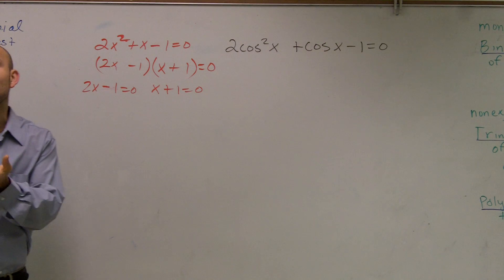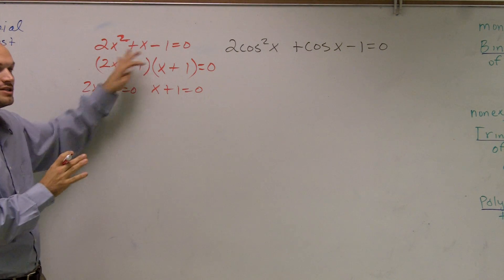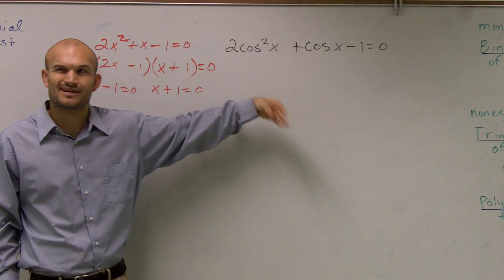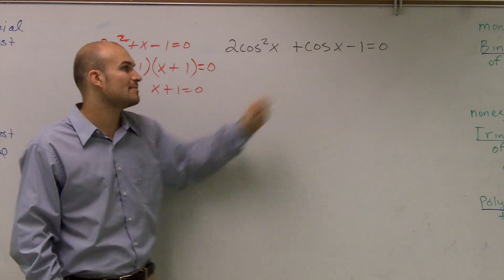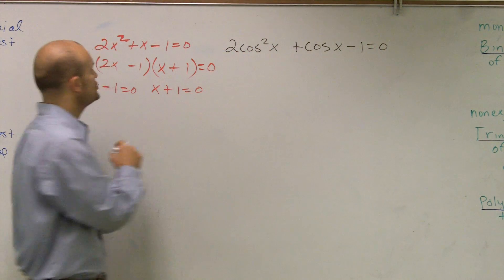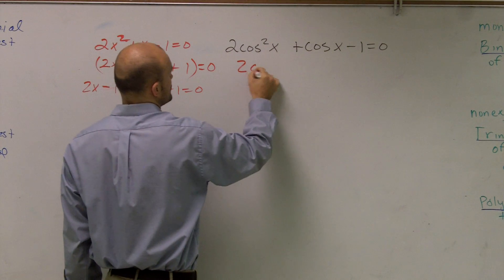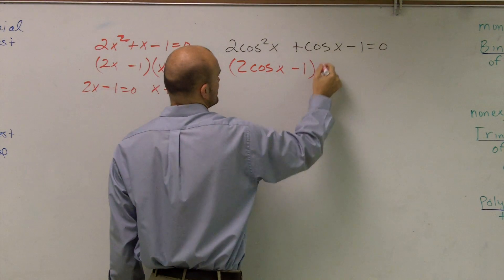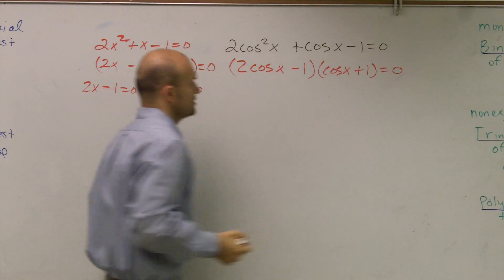Look for factoring out the GCF. Look for factoring trinomial, difference of two squared, whatever. Look to see if you can factor it. So I'm going to use the same technique now, just with cosines. I know it's a little bit more difficult, but really, the numbers and everything are going to remain the same. Rather than having a 2x squared, I have a 2 cosine squared of x. So it's just going to come 2 cosine of x minus 1 times cosine of x plus 1 equals 0.